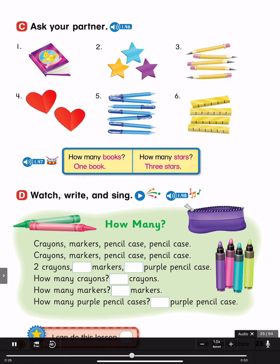Number 4: How many hearts? Two hearts. Number 5: How many pens? Seven pens. Number 6: How many rulers? Four rulers.